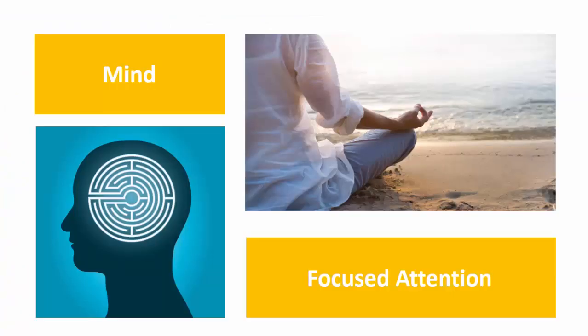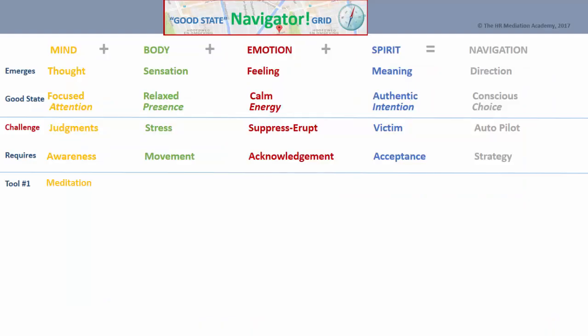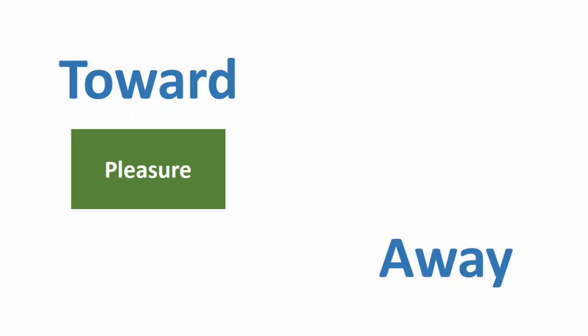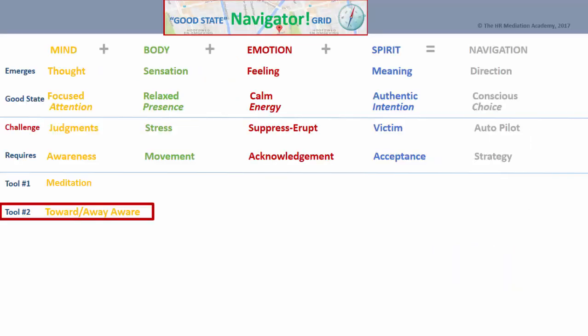When working with the mind and our thoughts, we want to strengthen our capacity to use our focused attention. Meditation is the primary tool for that. But we also have to address the way in which we make sense of the world through our judgments. Our primary judgment is between pleasure and pain — we move towards what we like and away from that which we don't. Toward-and-away awareness provides basic information for you to consider as you navigate.